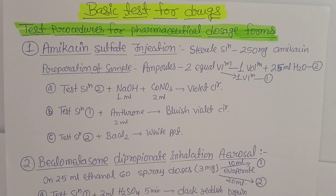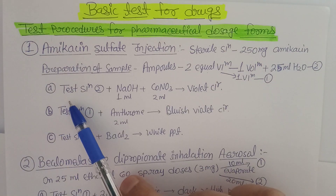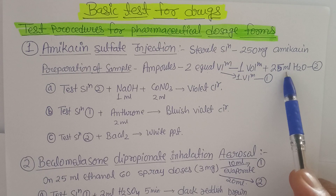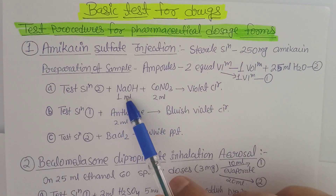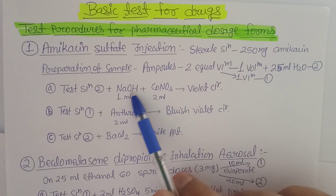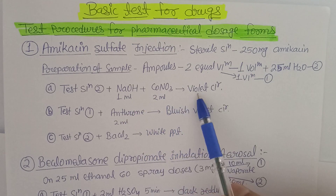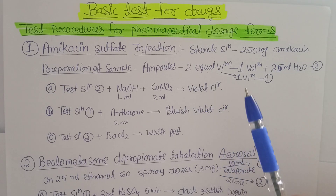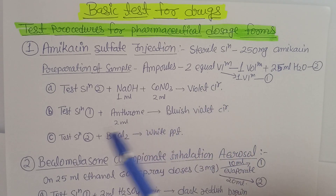For the first test: to Test Solution 2 (which had 25 ml of water added), add 1 ml of sodium hydroxide and 2 ml of cobalt nitrate. This gives a violet color, confirming the given injection sample is amikacin sulfate.